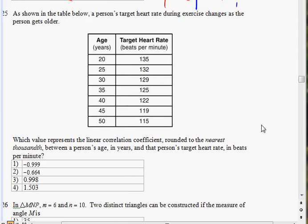Alright. Question number 25. From the table below, it shows the different target heartbeats of people of certain age. The main thing is actually just find out what the question, what they're asking for. It says which value represents the linear correlation coefficient rounded to the nearest thousandth between a person's age in years and that person's target heart rate in beats per minute. For this question, you do need your calculator, your TI-83/84. Let's pull that out.